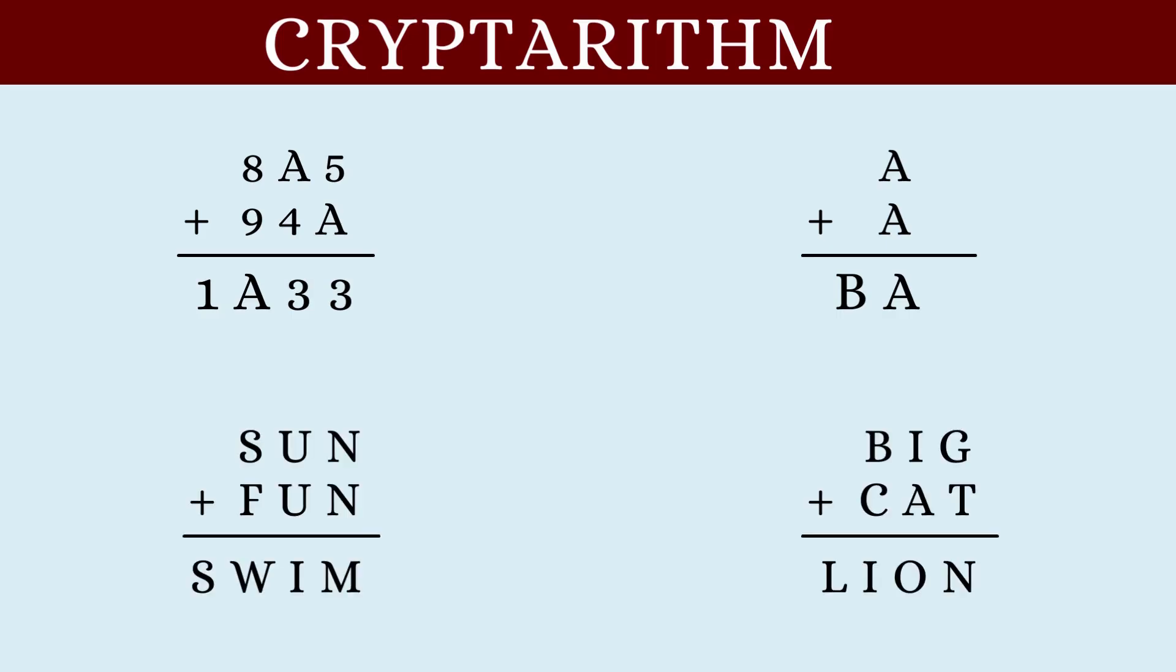Cryptarithms are puzzles which have an arithmetic expression where the digits are replaced by letters, each digit a different letter. Some of them have a mix of alphabets and numbers and a few others have all alphabets. And for the fun part, some of these cryptarithms have actual words and meaningful phrases.